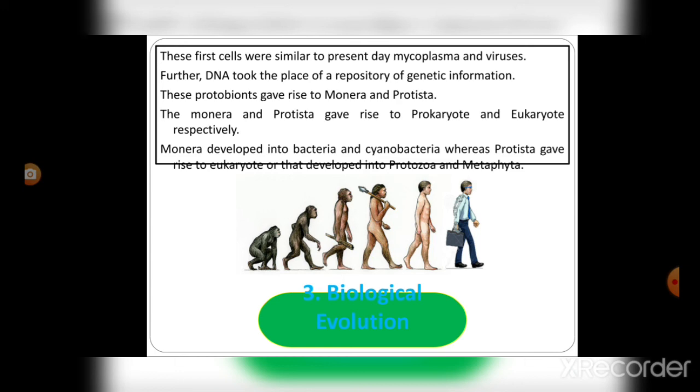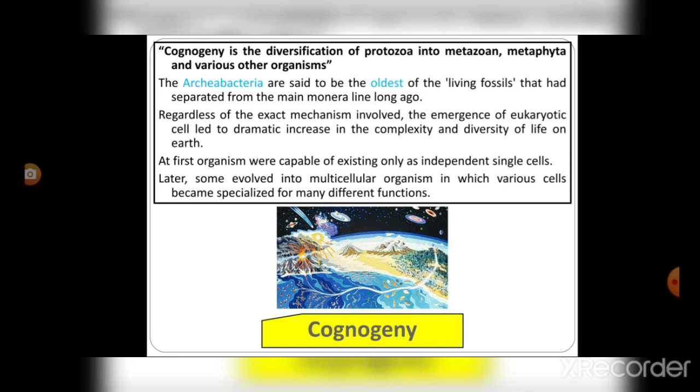Next is cognogeny. Cognogeny is the diversification of protozoa into metazoa, metaphyta, and various other organisms. The Archaea bacteria are said to be the oldest living fossils that had separated from the main Monera lineage long ago.